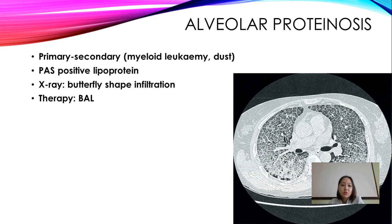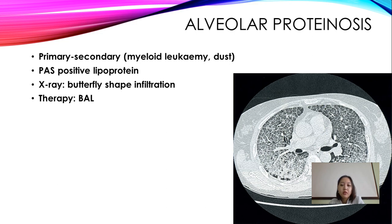Alveolar proteinosis is a rare disease, seen in primary, secondary, myeloid leukemia, and dust-related forms. PAS-positive lipoprotein is found. On chest X-ray you find a butterfly-shaped infiltration, also visible on CT scan. Therapy involves bronchoalveolar lavage.